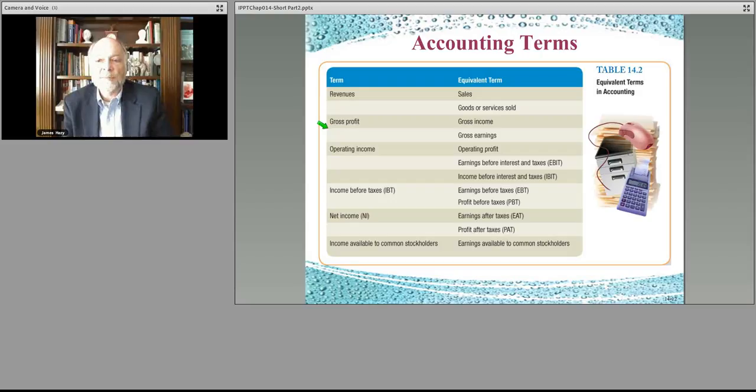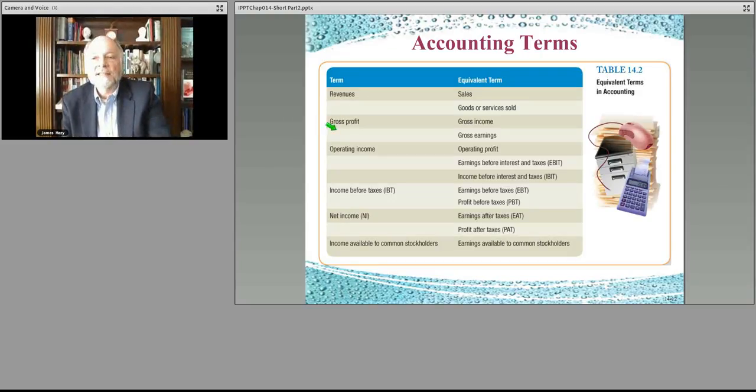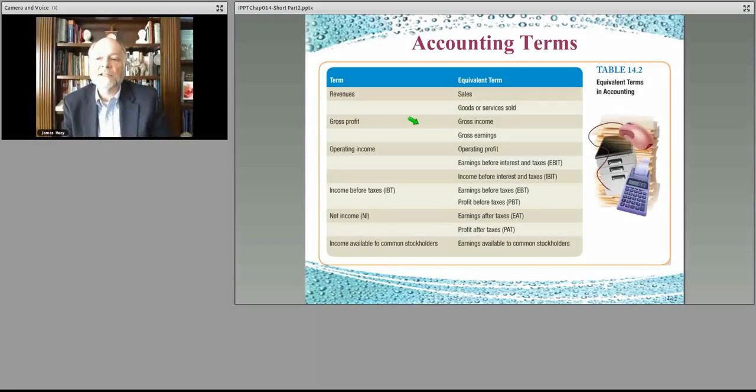Gross profit means the sales minus the amount of money it costs you to put that product on the shelf. Other people call it gross income, gross earnings. The term gross generally means, whenever you add something like profit or income or earnings—which is a profit idea—it's the sales that customers pay less the obvious variable costs.